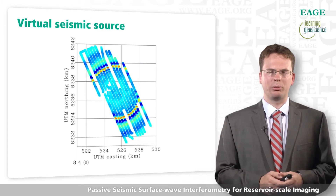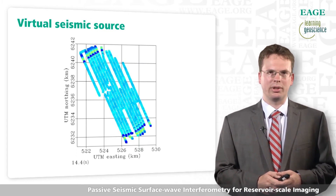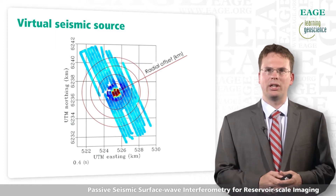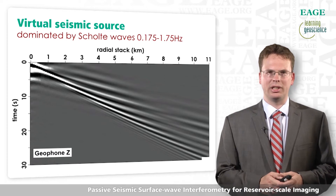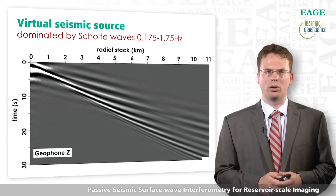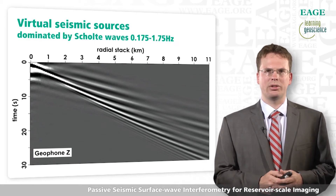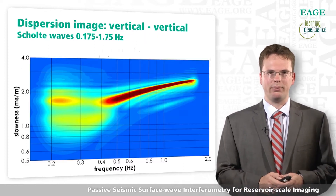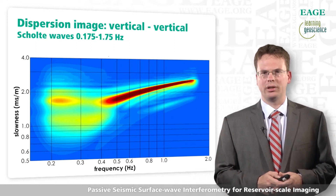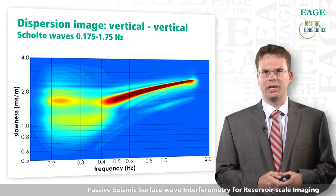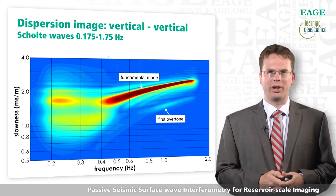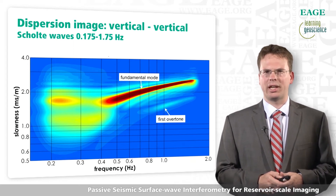Here is an animation of these virtual seismic sources. You can organize them and look at the stations as a function of radial offset, gathering all stations depending on their radial offset only. Then you get a panel where you can really see that these virtual seismic sources are dominated by interface waves — specifically Scholte waves between 0.17 and 1.75 Hz. These waves are very strongly dispersive, meaning that at different frequencies the wave travels with different velocities. A dispersion image tells you with which velocity these waves travel for a given frequency, and also how many different wave modes are present. In this case it is mostly the fundamental wave mode, with a much less strongly excited first overtone.